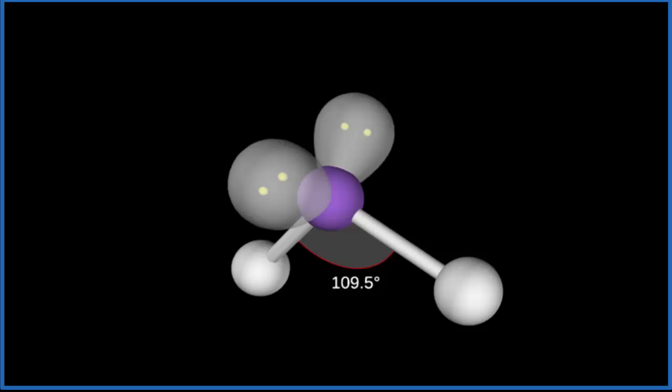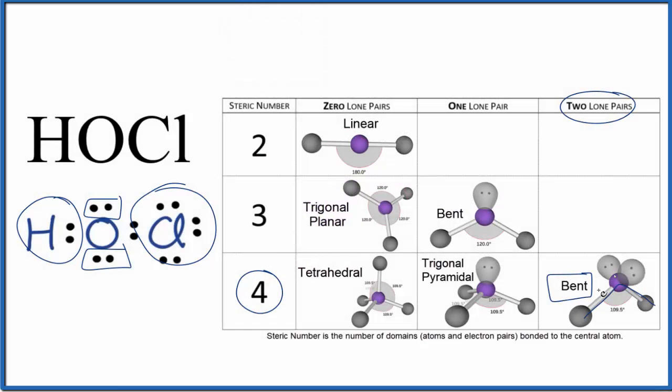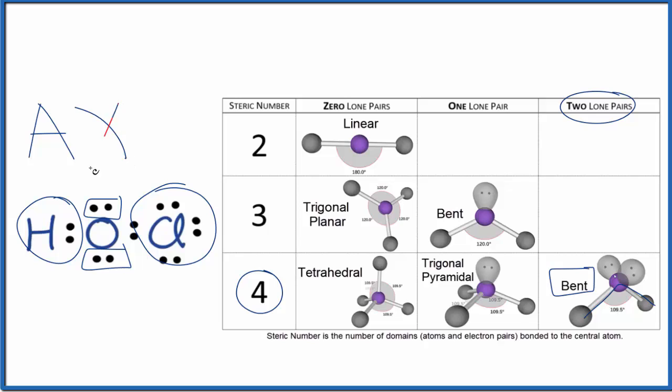Let's go back to our Lewis structure. So we have our bent molecular geometry. We could also use what's called the AXE notation to figure out the molecular geometry. A is the central atom, that's the oxygen. Then X, the number of atoms bonded. We have two atoms. E, that's the number of lone pairs. We have two lone pairs.